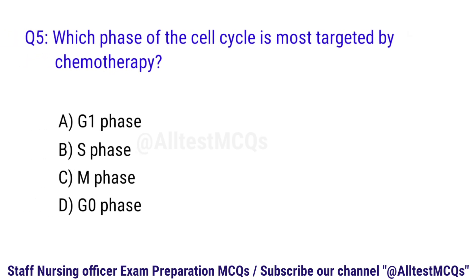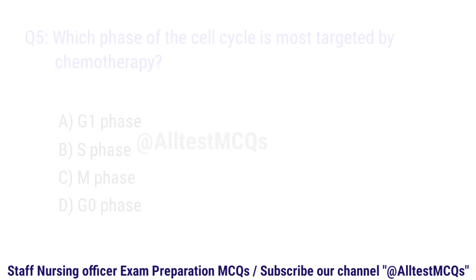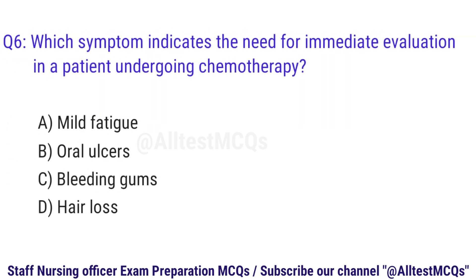Q5. Which phase of the cell cycle is most targeted by chemotherapy? The right answer is option B. S phase.